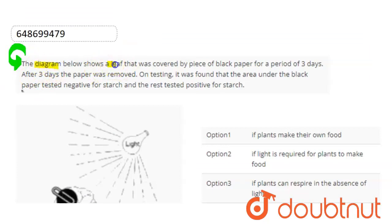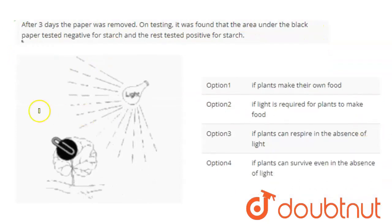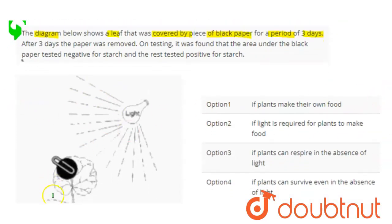Below shows a leaf that was covered by a piece of black paper for a period of 3 days. So here you can see a diagram, you can see a leaf, this is basically a leaf.